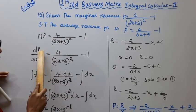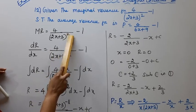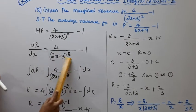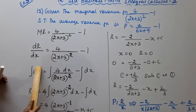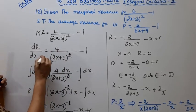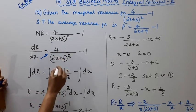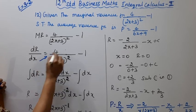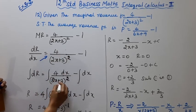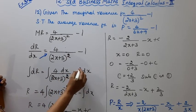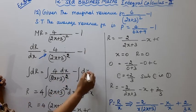Marginal revenue is dR/dx, equal to the right-hand side. So dR = [4/(2x+3)²]dx. That is the integral of 4/(2x+3)² dx minus the integration of 1 dx.